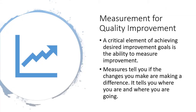Usually when we are coming up with school improvement plans, we're providing some kind of a measure. Most plans need to be centered around academic achievement of students, so you have to be able to measure that academic achievement. A critical element of achieving desired improvement goals is the ability to measure that improvement. These measures could be tests, evaluations, school projects, or performances — it really depends on what aspect of student achievement you're trying to measure. These measures can tell you if the changes you are making are making a difference. They tell you where you are and where you are going. The measures you use help you collect data to know whether the plan and interventions you've done have really made a difference.